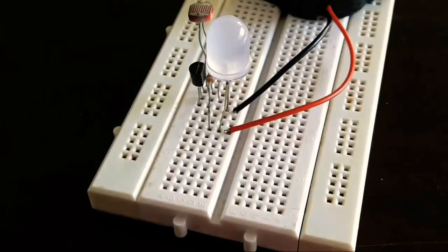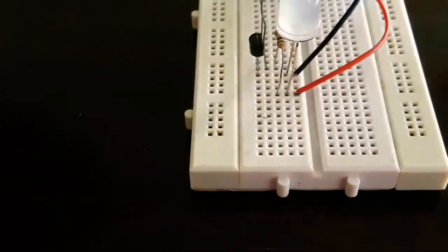Now connect the wire from the resistor to the positive side of the breadboard.